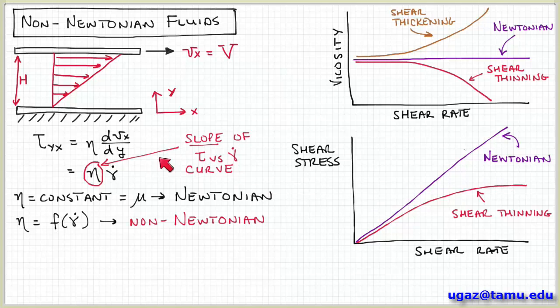And since the viscosity coefficient is related to the slope of this curve, then this corresponds to shear thinning behavior. Because the viscosity is sort of, you can think of it as the local slope of the shear stress versus shear rate curve. So here the slope, you can imagine, is getting smaller and smaller and smaller. So that means the viscosity is decreasing as a function of shear rate.